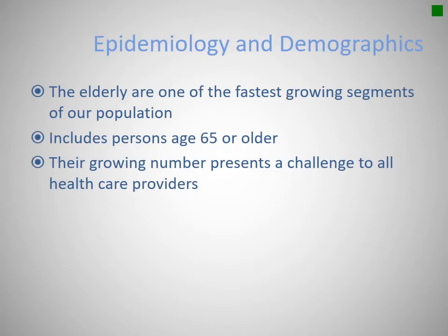The geriatric population, or the population over 65, is one of the fastest-growing populations in America. Specifically in West Virginia, 16% of our population is over the age of 65, and that number is suspected to double by 2025, making us the second highest geriatric population in the nation.